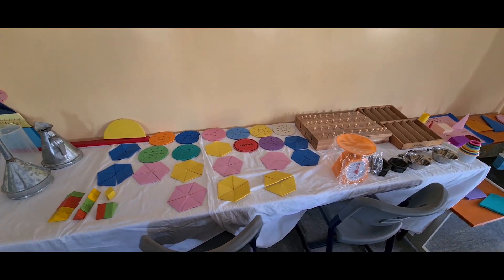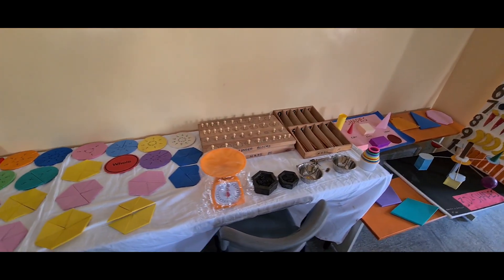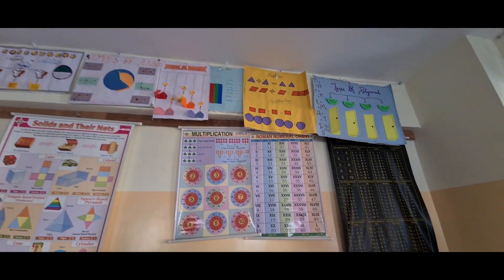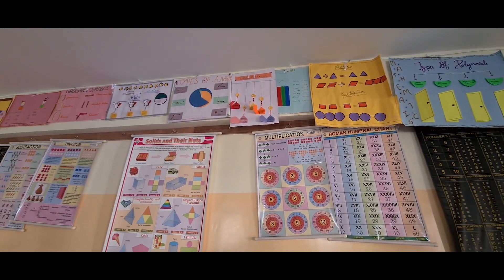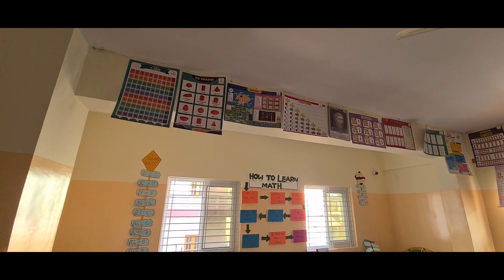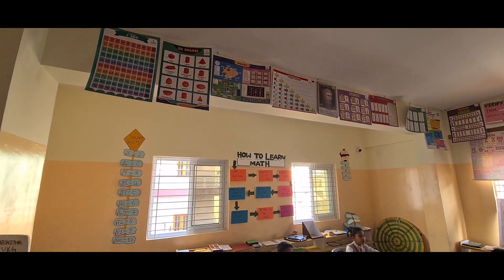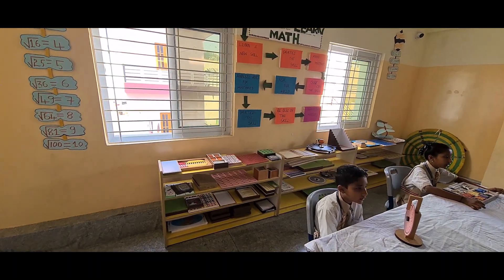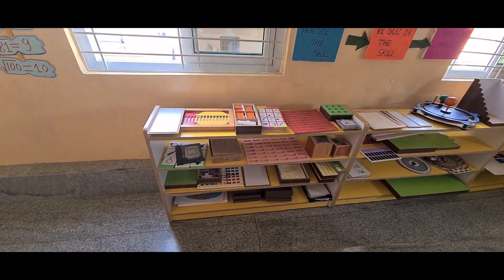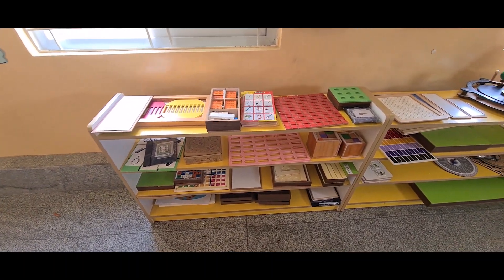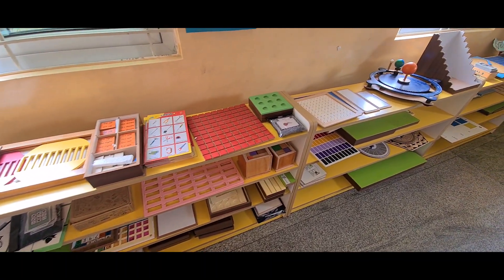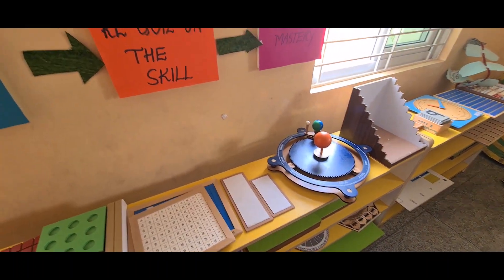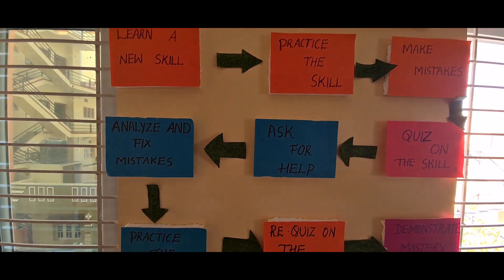Then cylinder. We already have a cylinder here. So this is the cylinder. Can you tell me how many faces are there? Three faces. Edges: two edges, because this is one edge and this is another edge — it is a curved face. So two edges. Vertices: zero vertices.